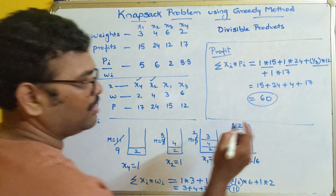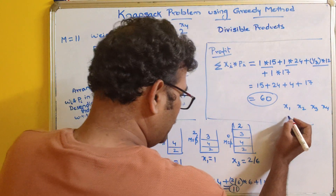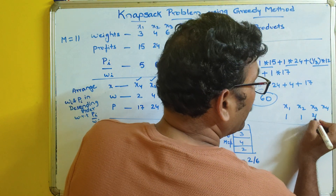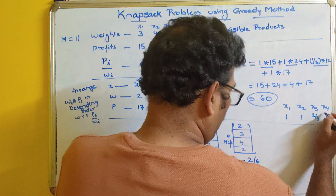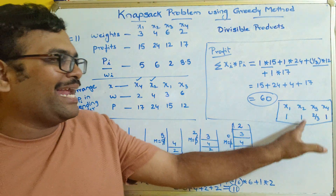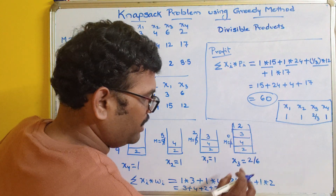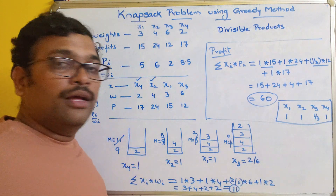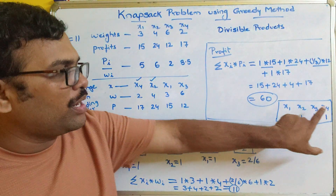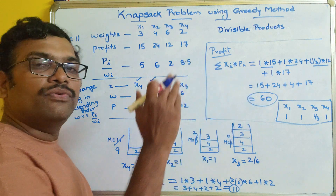If you insert the values, the result is: X1 = 1 (consider complete weight), X2 = 1 (consider complete weight), X3 = 2/6 = 1/3 (consider one-third portion), X4 = 1 (consider complete weight). By considering the complete weights of X1, X2, X4 and one-third weight of X3, you get a profit of 60.